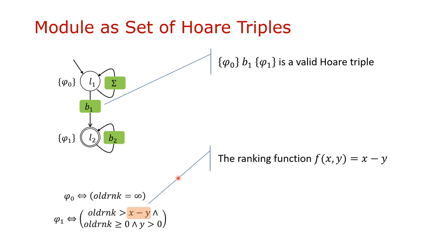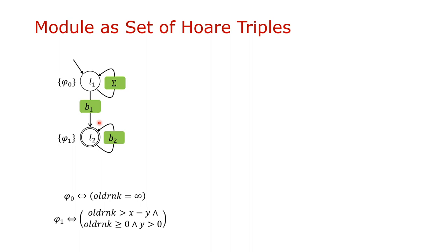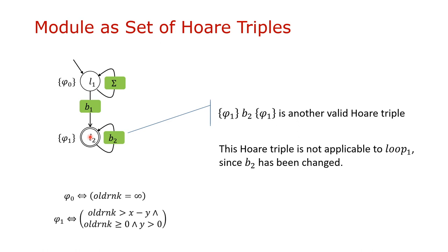Moreover, if we look at predicate φ1, the ranking function x minus y is embedded in this predicate. By reusing this Hoare triple, we also reuse this ranking function. Recall that synthesizing a ranking function is among the most time-consuming operations in termination analysis, so reusing this information can save a great deal of effort. Now consider another edge from L2 to L2 on block B2: the valid Hoare triple is {φ1} B2 {φ1}. However, this Hoare triple is not applicable to the new program version because B2 has been changed.